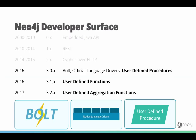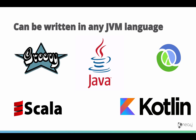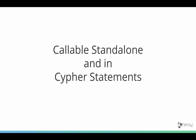Today we want to look at user-defined procedures, user-defined functions, and aggregation functions. You can implement them in any programming language on the JVM — Java, Kotlin, Groovy. Basically it's an annotated Java method that is deployed to Neo4j and can be called from Cypher either standalone or as part of Cypher statements.